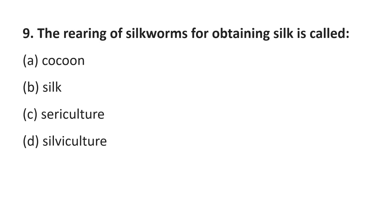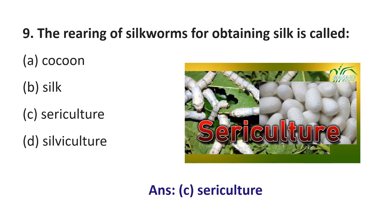Question number 9. The rearing of silkworms for obtaining silk is called: Option A, Cocoon; Option B, Silk; Option C, Sericulture; Option D, Silviculture. The answer is Option C, Sericulture. So, the rearing process of silkworm is called Sericulture.